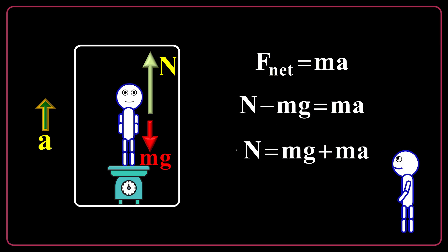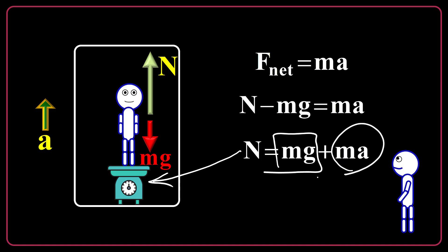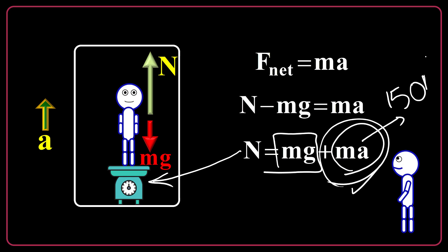You will read N on the weighing scale. The weighing scale indicates your weight and unfortunately something more — this is exactly the fictitious force. You are fooling the weighing scale; it thinks you are heavier than usual. For example, if ma equals 150 newtons, the weighing scale indicates 150 newtons more than your actual weight — the weight you feel when at rest without acceleration.